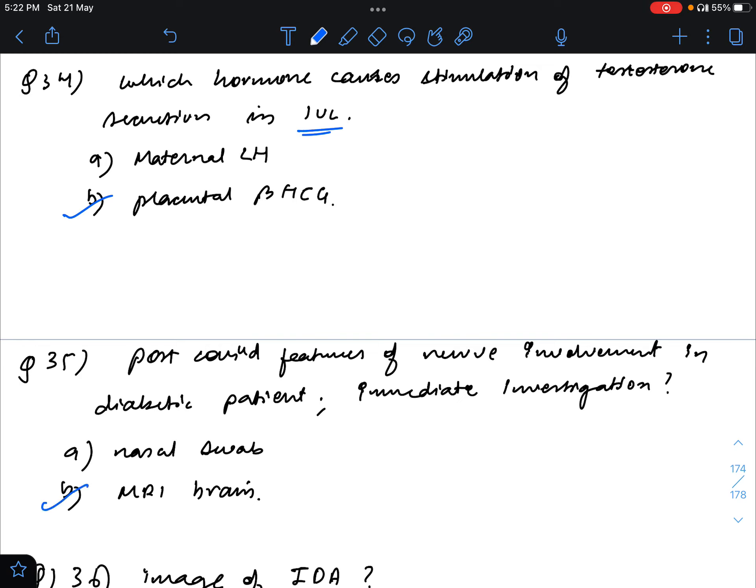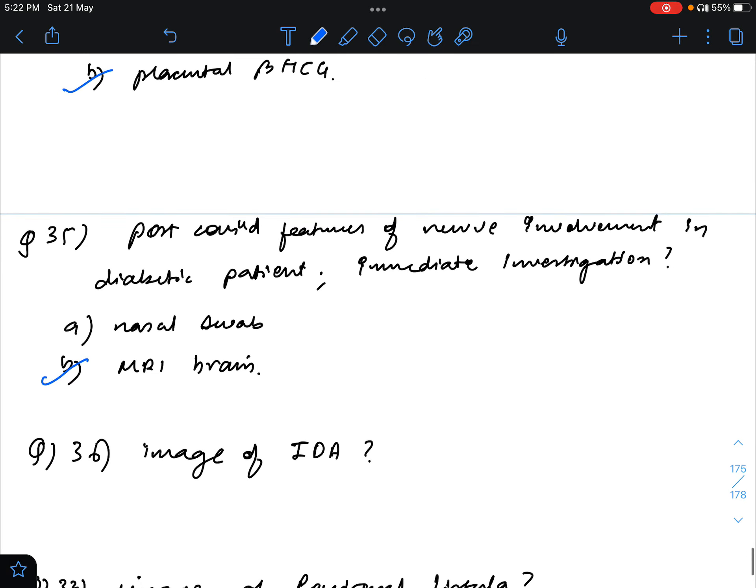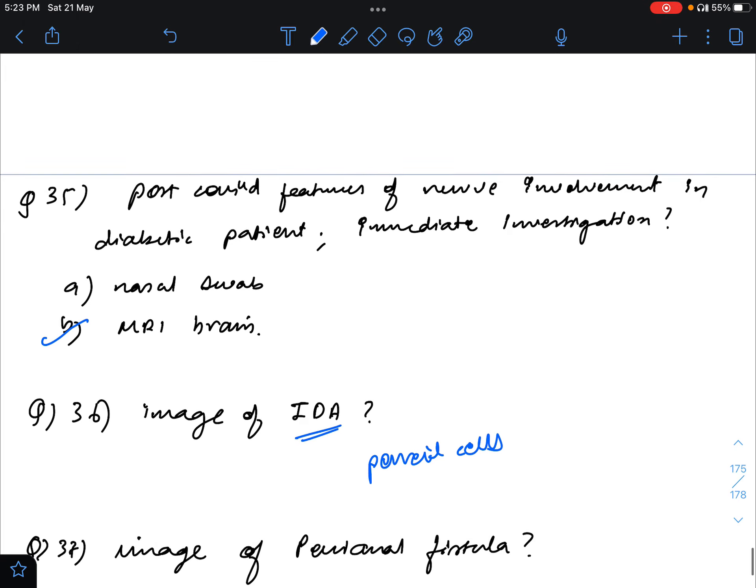There was a simple question where they gave a facial blood image that showed pencil cells. The answer for that portion will be iron deficiency anemia. They also showed increased central pallor, so iron deficiency.